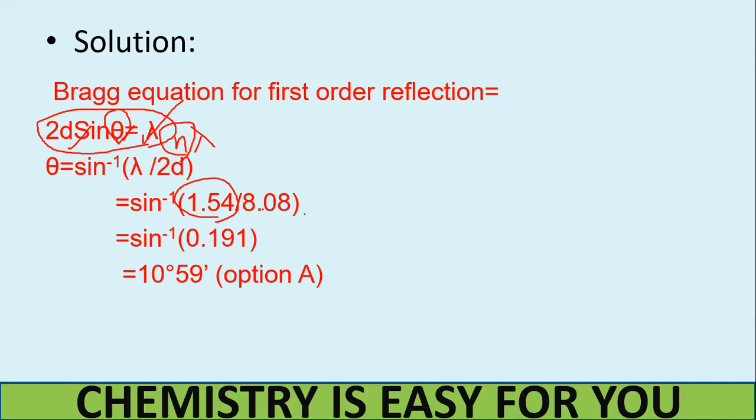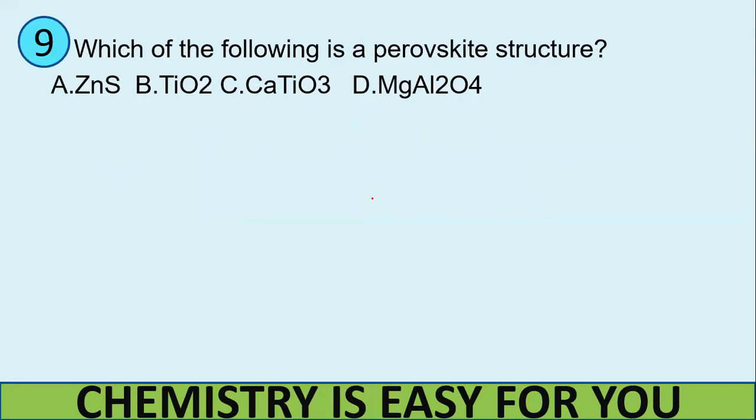Therefore theta is equal to sin inverse of lambda by 2d. Now we are substituting. We know lambda is given as 1.54 and d is given as 4.04. So 2d becomes 8.08, sin inverse of 0.191 which is 10 degree 59 minute which is option A. So that's the answer. It's a very direct and simple question. Keep this equation in mind. Don't forget this n. Sometimes to confuse you they'll give the question for second order reflection. So in that case you have to give the value of n as 2. If it is first order reflection you can directly write it as 2d sin theta is equal to lambda.